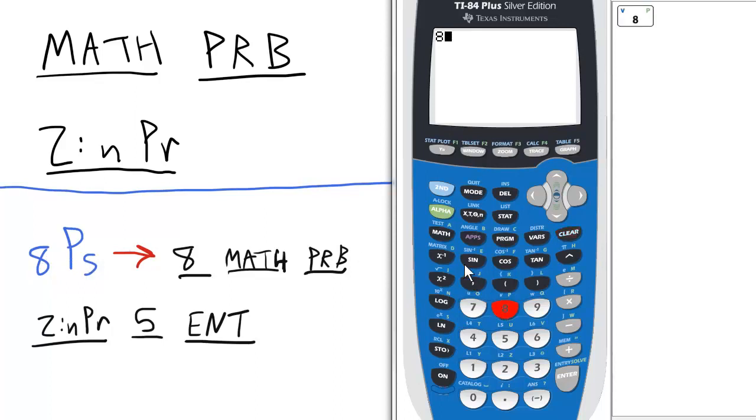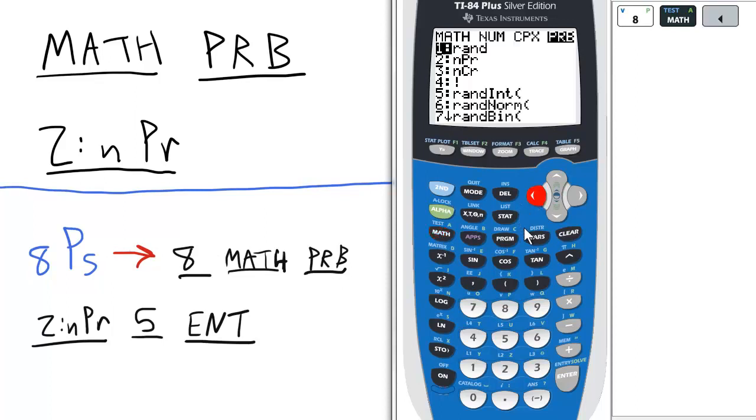I would first enter the 8, press Math for the Math menu, scroll to the left for PRB, and select 2 for NPR.